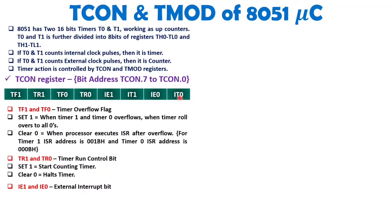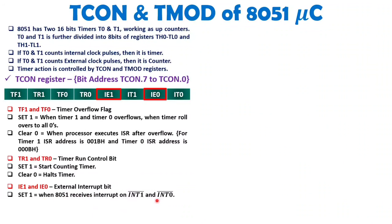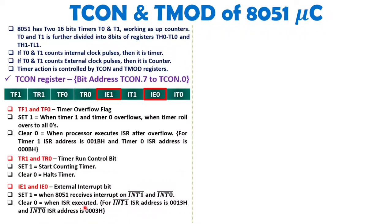There are four bits related to interrupt in TCON. IE1 and IE0 are related to external interrupts INT1 and INT0. When 8051 receives an interrupt on these pins, these bits become 1, and they get cleared to 0 when the ISR is executed. For example, if INT1 receives an interrupt, IE1 becomes 1, and 8051 jumps program control to the ISR address, then clears that bit. ISR address for INT1 is 0013 hex and for INT0 is 0003 hex.